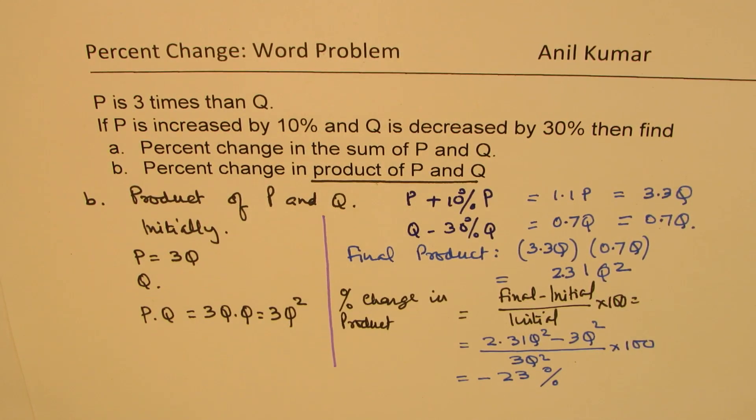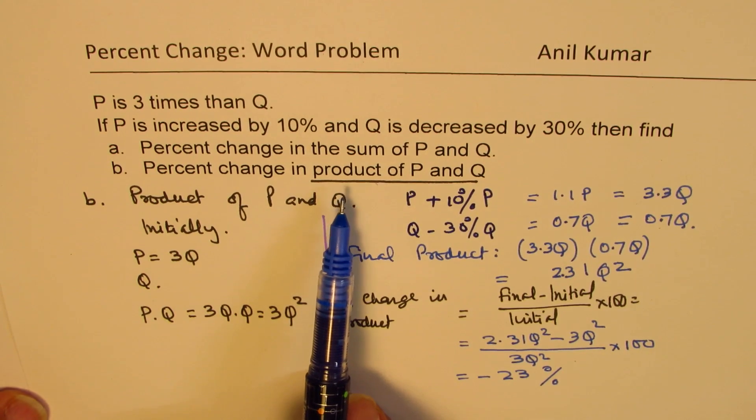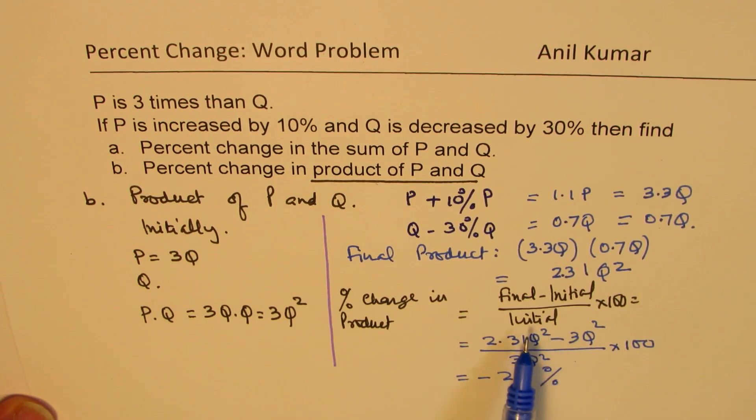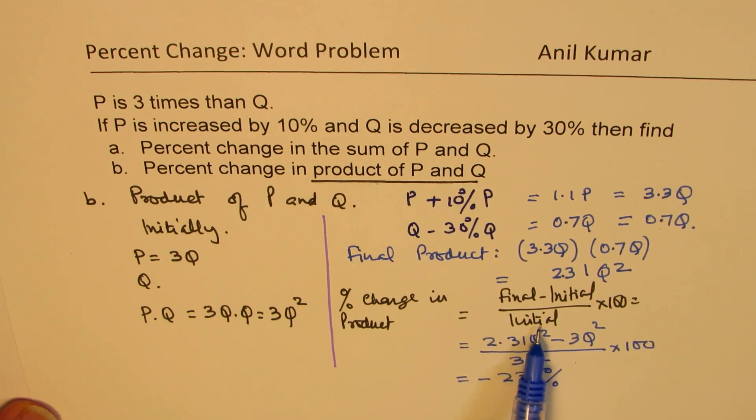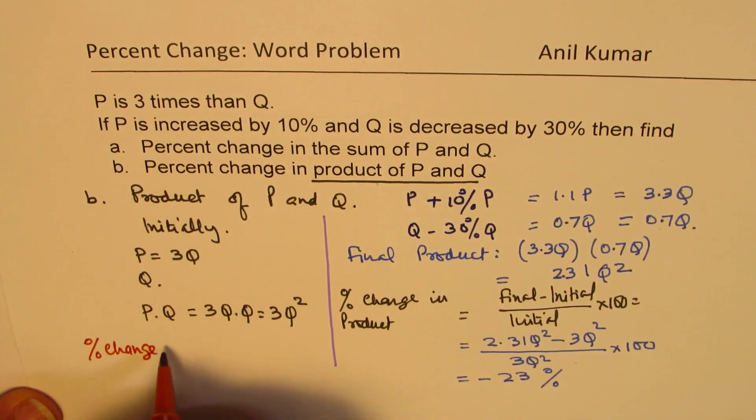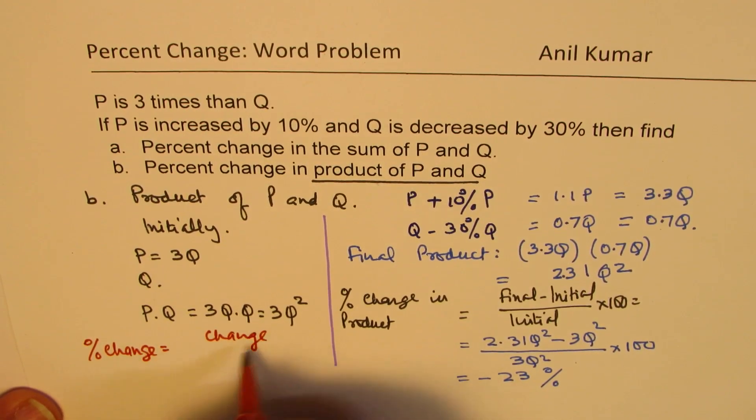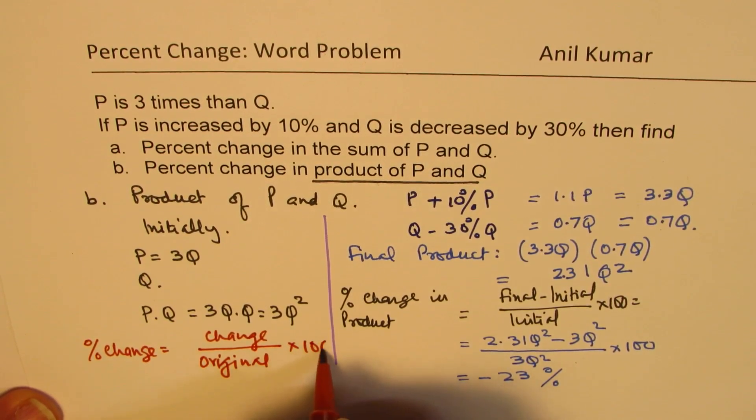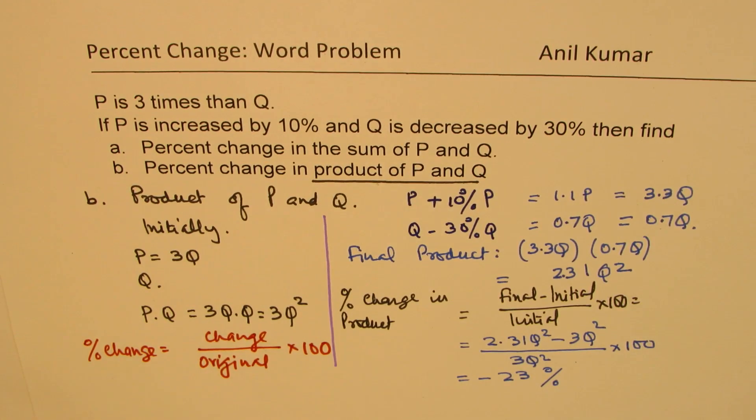So I hope that helps you to understand that when we are given a situation, it is kind of important to understand what kind of change we are looking for. And also remember that always the initial amount is placed in the denominator and the formula should be change over. So let me write down the formula once again. Percentage change is change divided by original times 100. So that is how you should be calculating percentage. So I hope that helps. Feel free to write your comment, share your views and if you like and subscribe to my videos, that would be great. Thanks for watching and all the best.